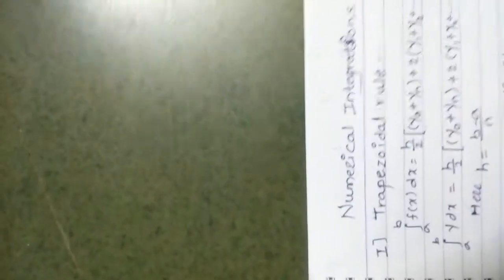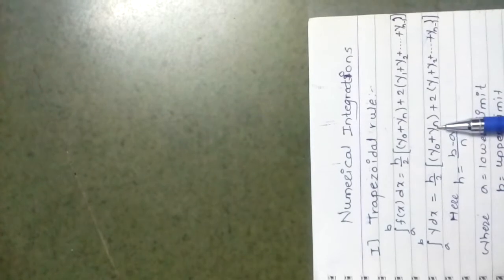Our first point is the trapezoidal rule. The formula for the trapezoidal rule is: the integration from a to b of f(x) with respect to x equals h over 2 times [y0 plus yn plus 2 times (y1 plus y2 plus ... up to y(n-1))]. Since f(x) is a functional relation also denoted by y, we replace f(x) with y in the formula. That is the formula of the trapezoidal rule.